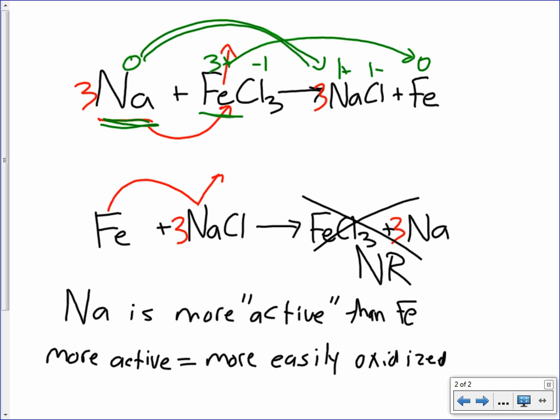In the second case, iron attempts to go from a zero to a three plus, like this, but that doesn't work. Can't do it. It's not as easily oxidized as sodium is, so the reaction is more favorable for sodium to stay bonded with chlorine.